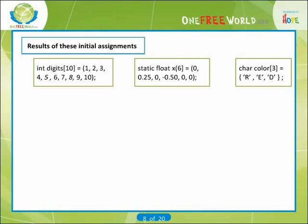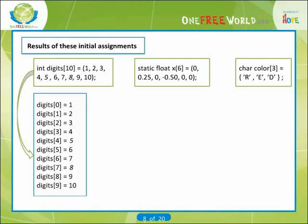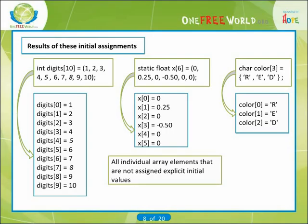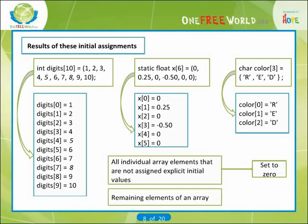The results of these initial assignments, in terms of the individual array elements, are as follows. Remember that the subscripts in an n-element array range from 0 to n-1. The results for the first, second, and third examples are shown. All individual array elements that are not assigned explicit initial values will automatically be set to 0, including the remaining elements of an array in which some elements have been assigned non-zero values.